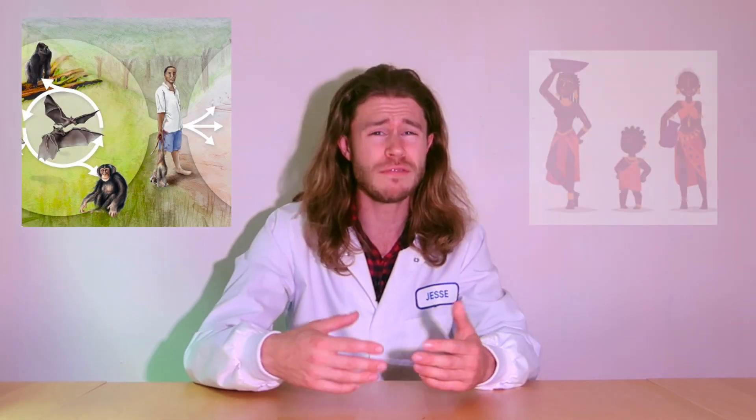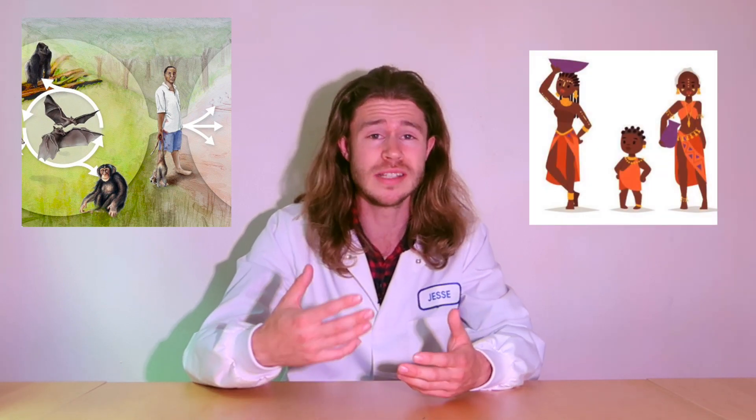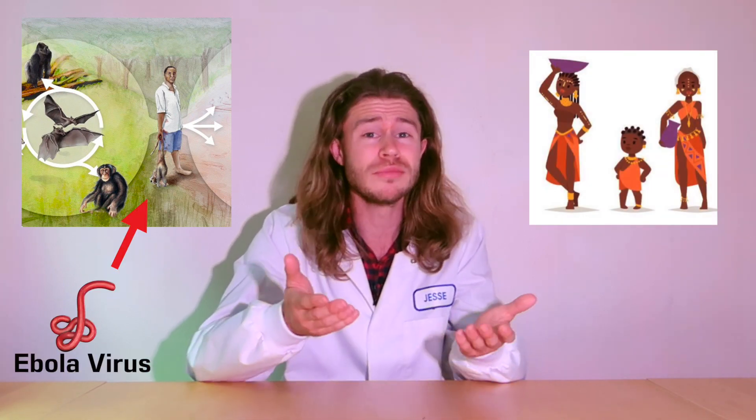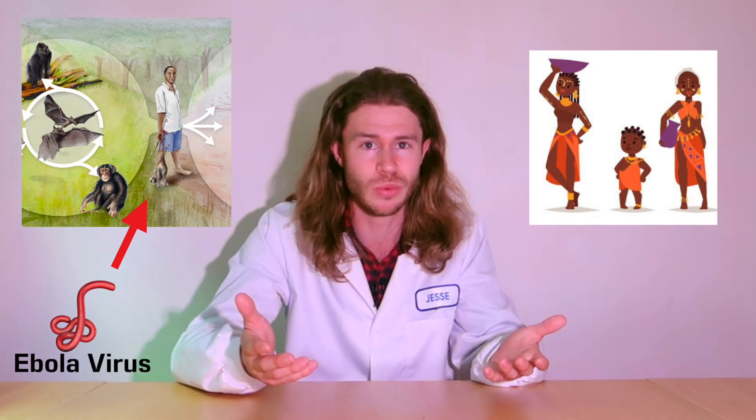Where does the bloody thing come from? Well, Ebola is usually only found in certain animals in central Africa — things like fruit bats, gorillas, chimpanzees. But when you live in rural central Africa, you don't just go down to the local store to buy some dinner. Sometimes you have to go out into the jungle and find your dinner. So sometimes an African person might go out hunting and come back with a gorilla or chimpanzee, and if that animal was infected with Ebola virus, now the whole family could be infected.